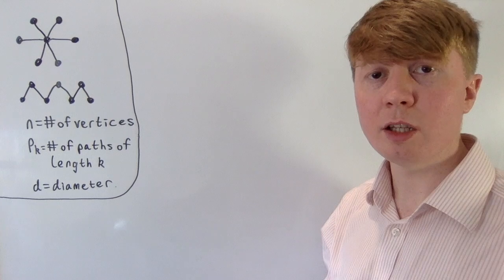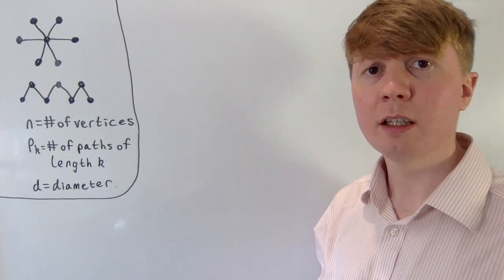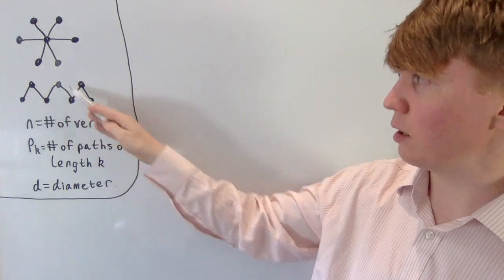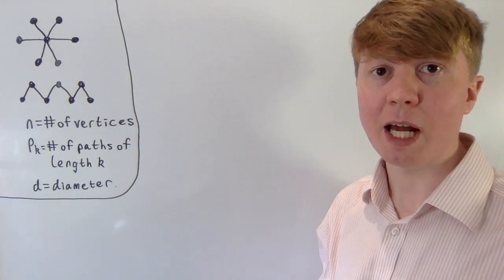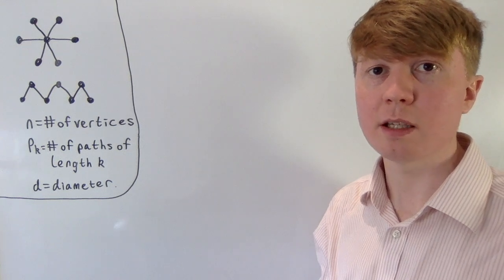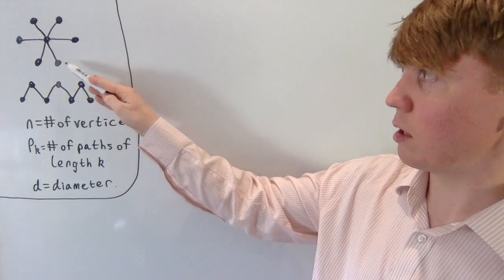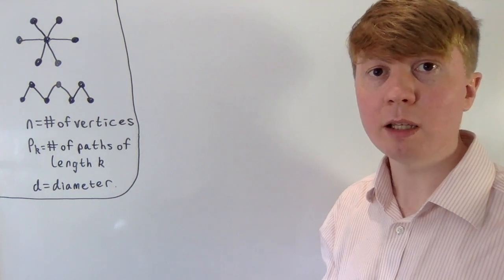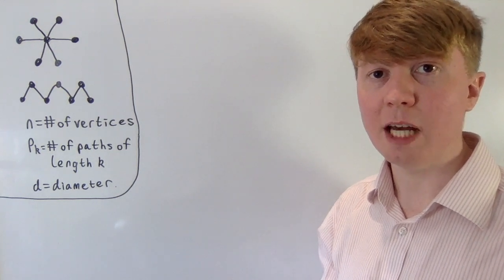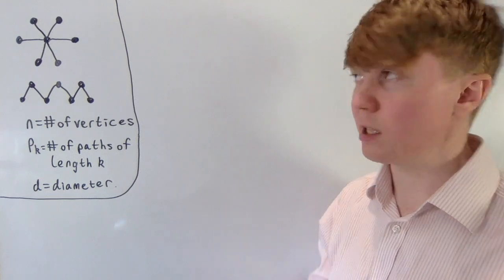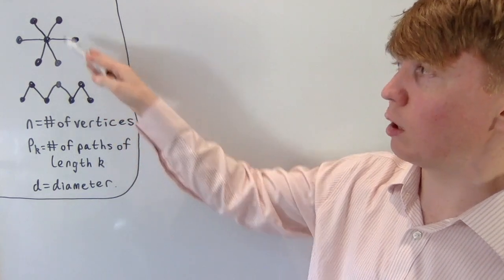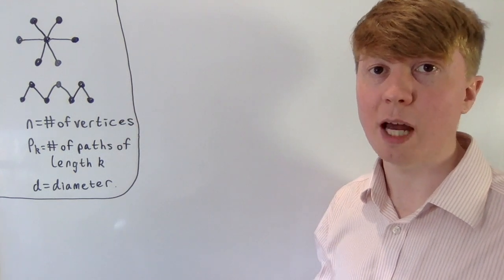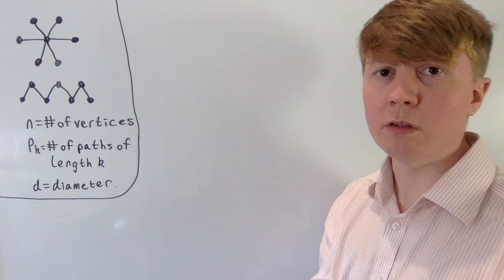A path is just a sequence of edges which are all connected to each other. This entire tree would count as a path of length 6 because it contains 6 edges, whereas in another tree there are lots of paths of length 2. The diameter of a tree is the length of the largest path within that tree. Our first example has diameter 2, whereas another has diameter 6.